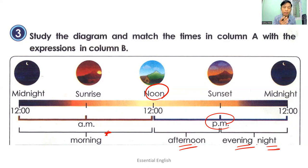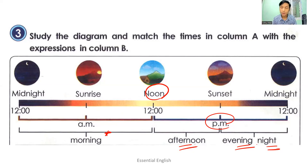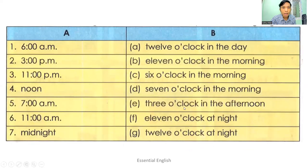A.M. refers to ante-meridian and P.M. refers to post-meridian. Think about the time: seven A.M. is in the morning. Seven P.M. might be evening. Six P.M. might be evening. These are the uses of the times. Let's match column A with column B.